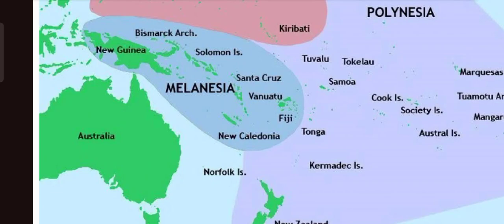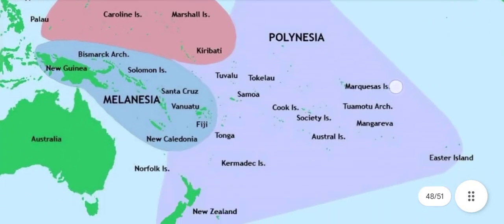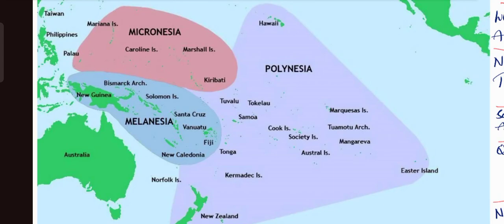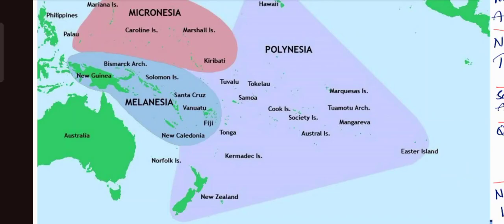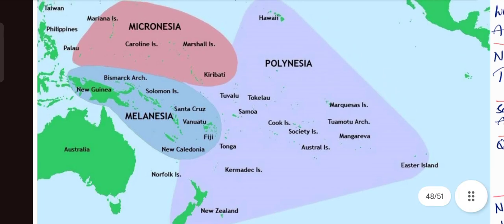Now let us come to Polynesia. It is a triangular shape. On the northern side is Hawaii Island, on the eastern side is Easter Island which is near Chile, and on the southwestern side are Norfolk Island and New Zealand. Above Norfolk and New Zealand, there are two islands: Kermadec Islands and Tonga Island.